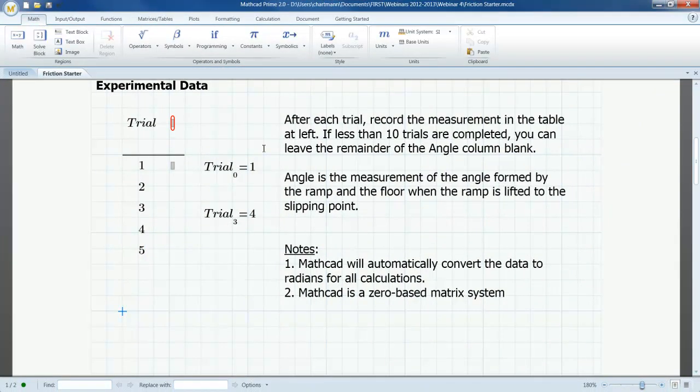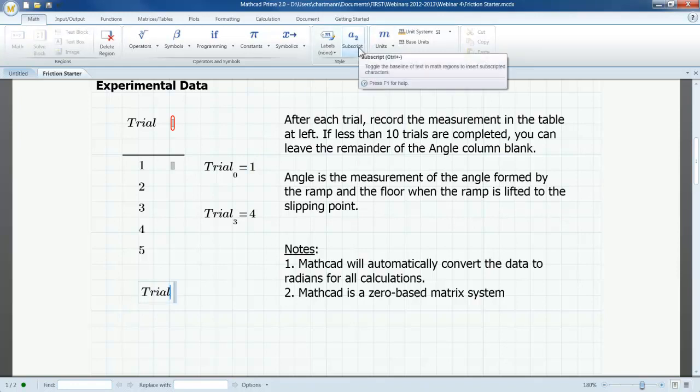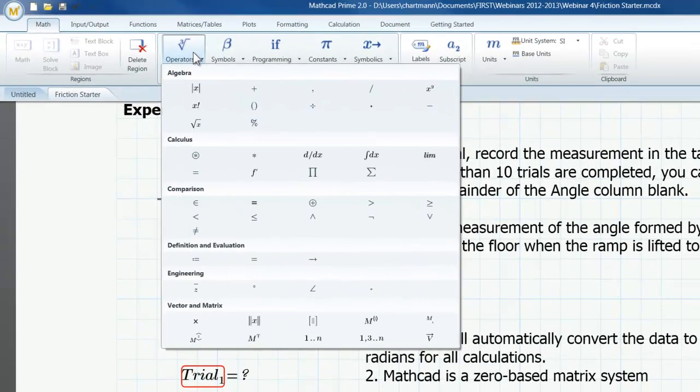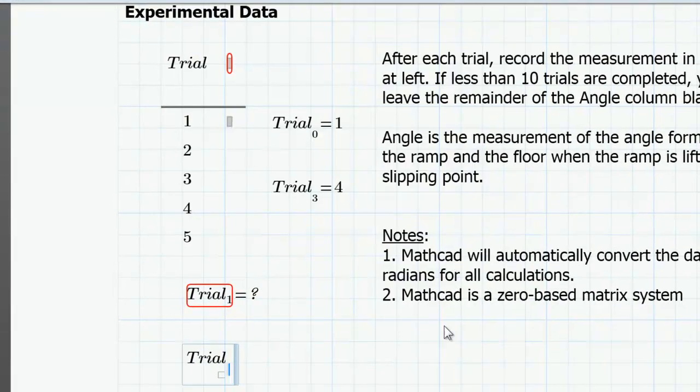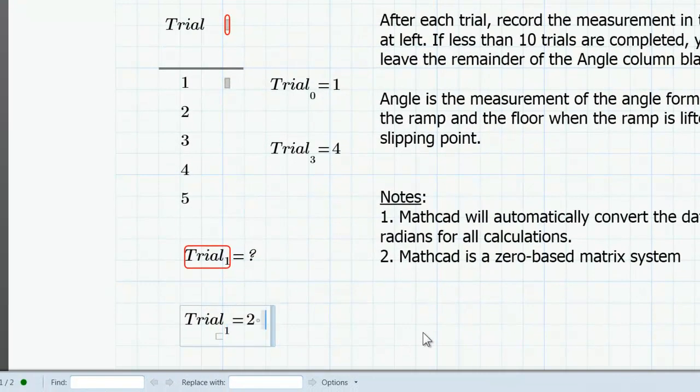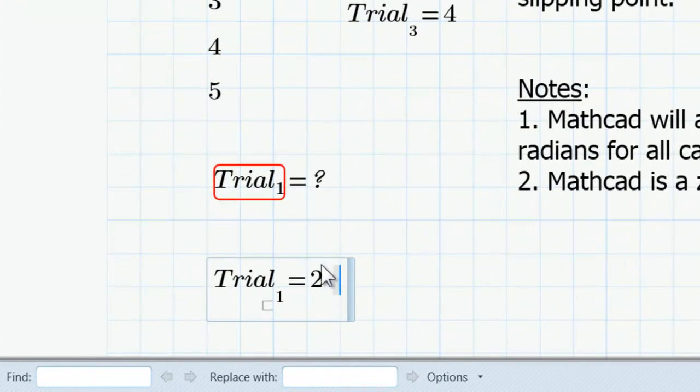Clicking on the Math ribbon, subscripts are part of a variable name. So when I'm typing a name for a variable, like variable trial, I can add a subscript by clicking on subscripts and typing one. Currently, Trial one is undefined in my worksheet. However, using the same variable name, and I can find matrix index on the Math ribbon as well under operators, and going down to matrix index and inserting that, Trial sub one is equal to two. So we can see the difference between the two types of subscript notations.